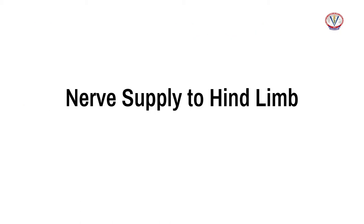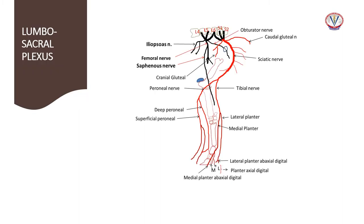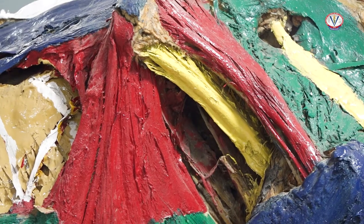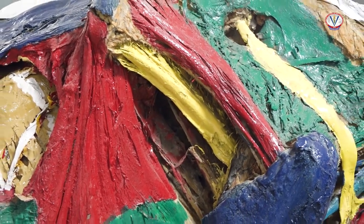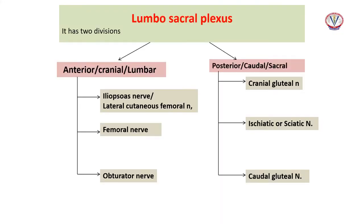The motor and sensory nerve supply of the hind limb structures originates from the network of nerves called the lumbosacral plexus. The plexus is formed by convergence and intercommunication of ventral rami of the last three lumbar and first two sacral spinal nerves. The lumbar plexus is placed at the ventrolateral aspect of the lumbar transverse processes of the fifth and sixth lumbar vertebrae, while the sacral plexus is placed below and lateral to the cranial aspect of the wings of the sacrum.